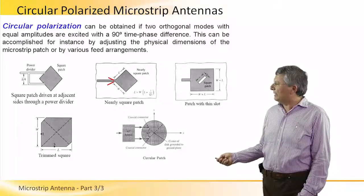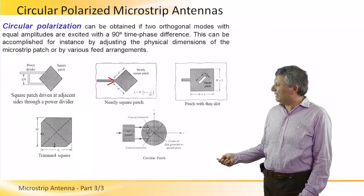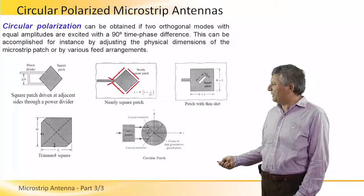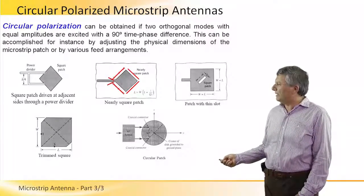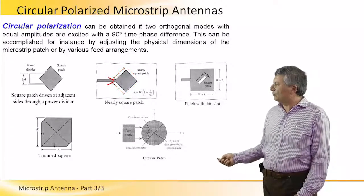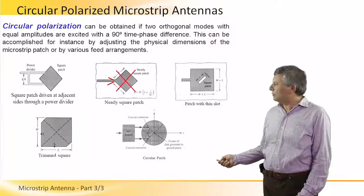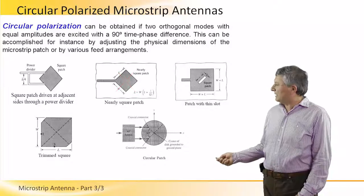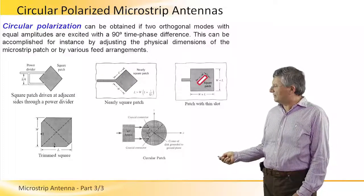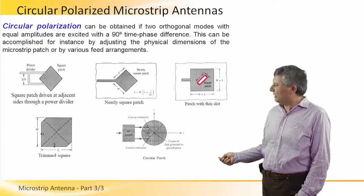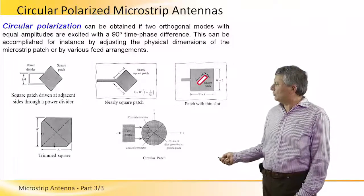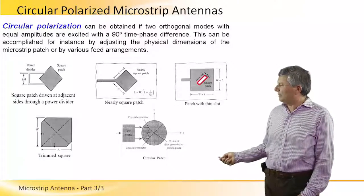Another way to obtain the same effect is by feeding the microstrip antenna at one of its corners and by slightly changing one of the dimensions of the patch, again obtaining excitation of two orthogonal modes with 90-degree phase difference. The same effect can also be obtained if we cut an oblique slot in the patch, which again yields excitation of two orthogonal modes with a 90-degree phase difference.